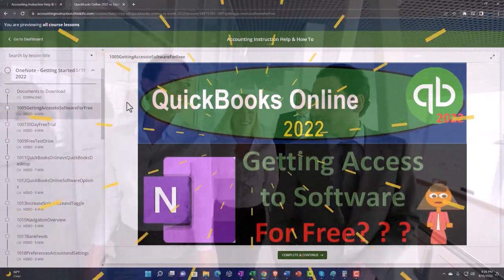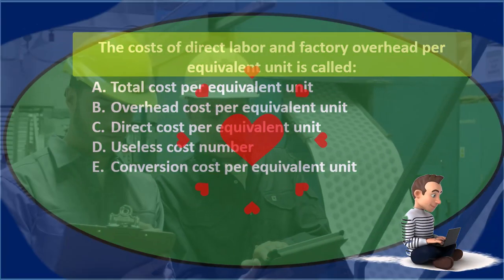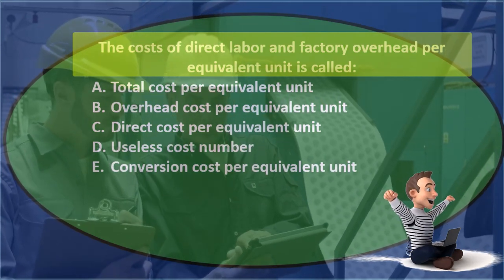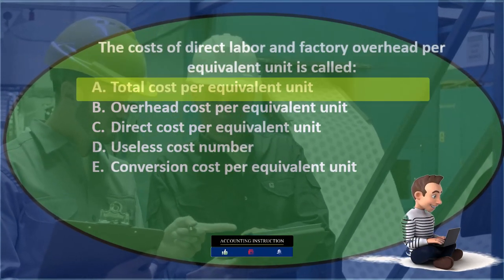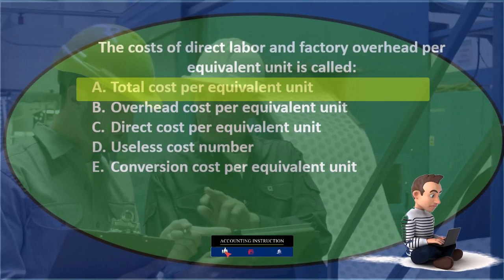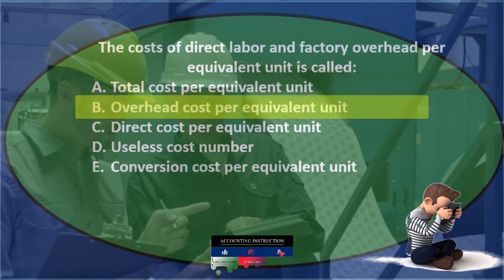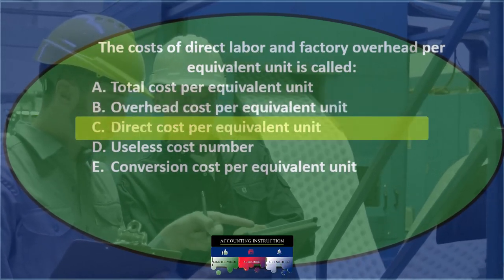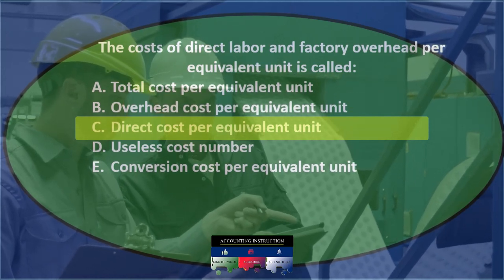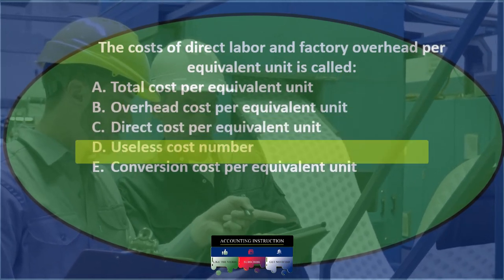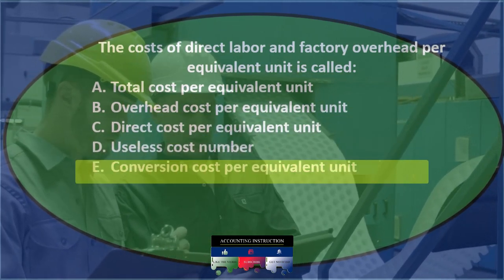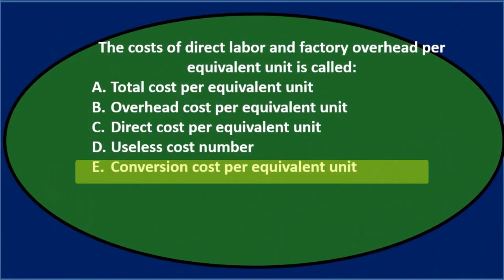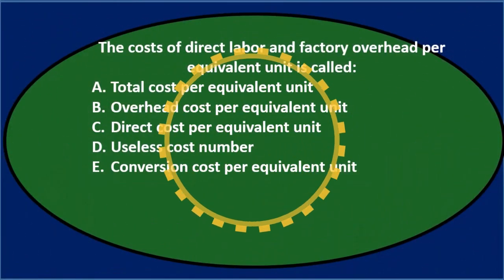First question: the costs of direct labor and factory overhead per equivalent unit is called — A: total cost per equivalent unit, B: overhead cost per equivalent unit, C: direct cost per equivalent unit, D: useless cost number, E: conversion cost per equivalent unit. We'll go through this again and use the process of elimination to narrow this down.